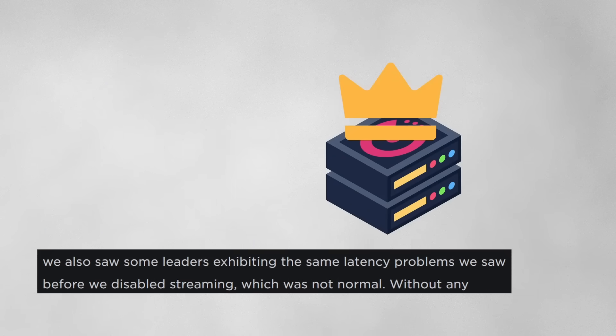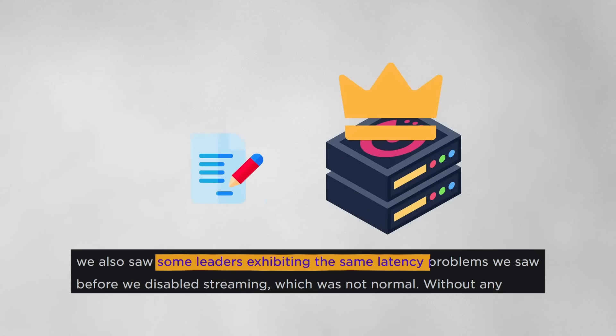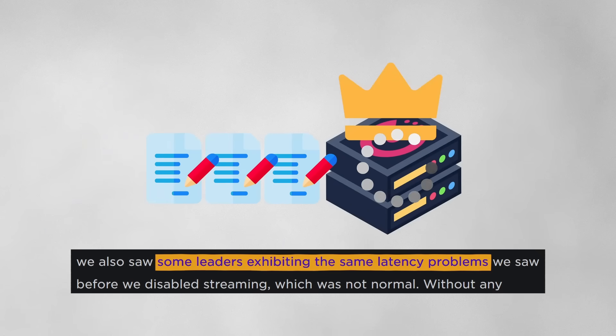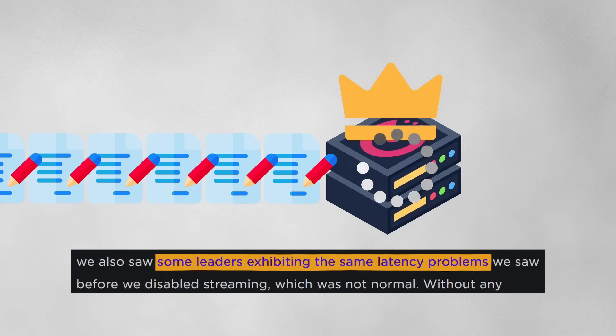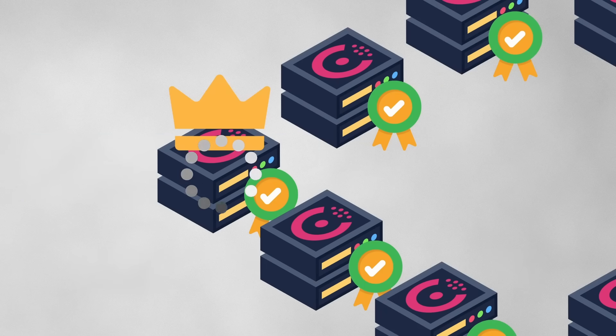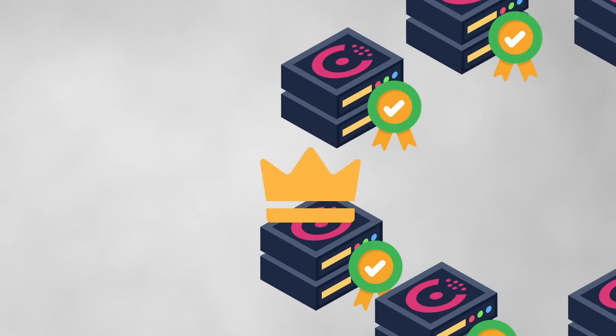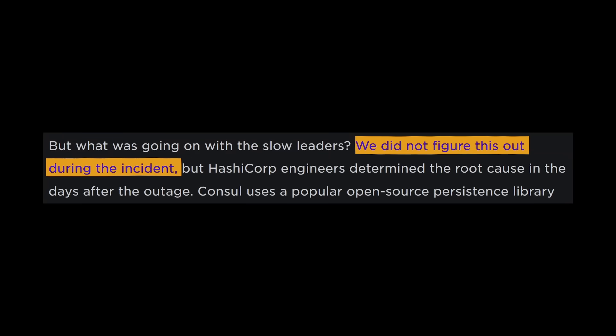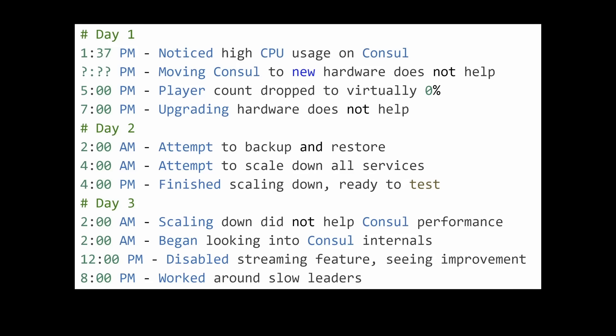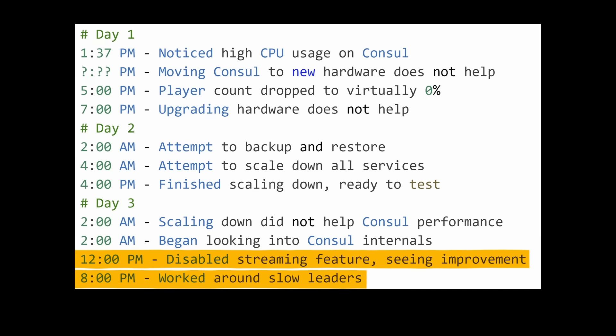But they weren't out of the woods yet. Some specific leader servers were still exhibiting the same 2-second latency issue. The engineers worked around this by preventing these mysteriously slow leaders from getting elected, as they could not figure out the cause at the time. Putting that issue aside, it was now 8pm October 30th, 54 hours since the start of the outage. They had disabled streaming and the slow leaders, and Consul was consistently stable.